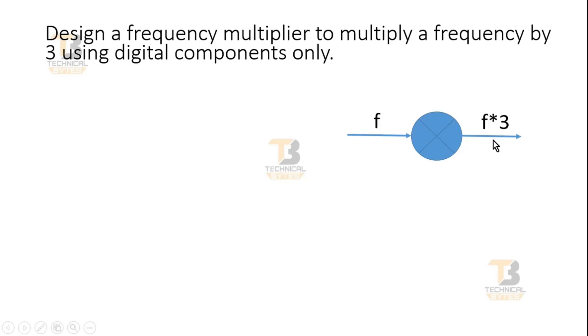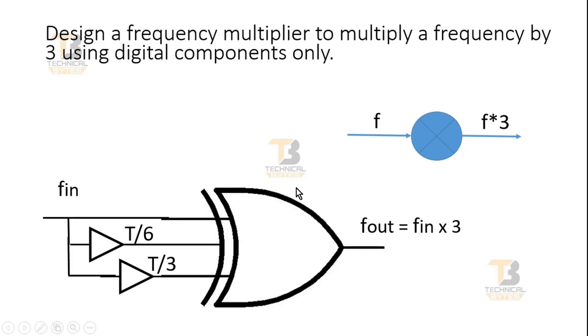Now let me reveal its answer. The answer is we have to use an XOR gate where the input to it will be F in—that is this F frequency—delayed by T by 6 and delayed by T by 3. These two outputs of these delay units will also go to this XOR gate, and finally you will get your desired output F out, which will be F in by 3. Here F in is this F frequency, and T is the time period of the input frequency F in.